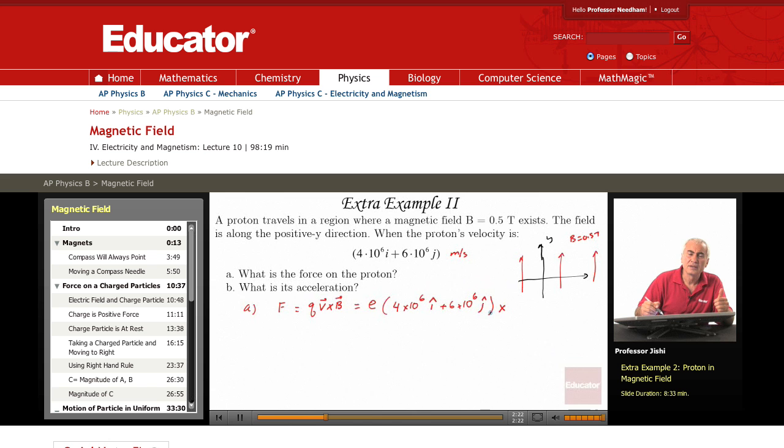Cross B. B is 0.5 Tesla, so 0.5. And what is its direction? In the positive y direction. So the positive y direction means J hat. So B is 0.5 J hat. It has a magnitude of 0.5 and it's in the positive y direction.